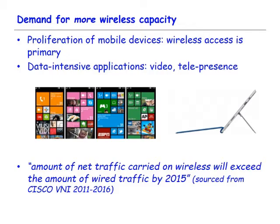The motivation of this line of research is simple: we need more wireless capacity. Because the wireless network has become the primary network for access, we have all these smart devices — smartphones, tablets, Ultrabooks — which use wireless as the only access to the internet. Mobile devices have also become more powerful, enabling data-intensive applications like video conferencing and even telepresence.